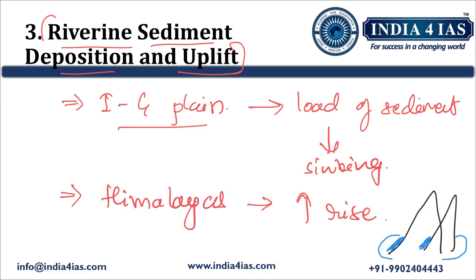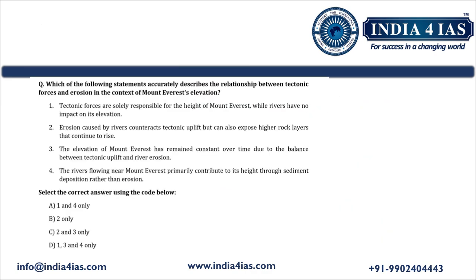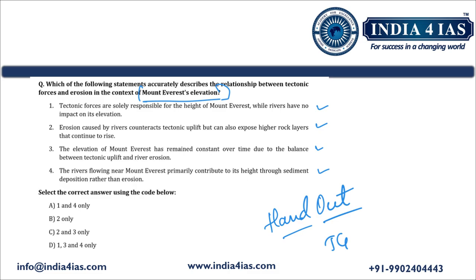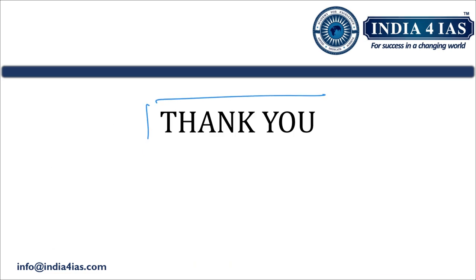After eroding of the material, the crust experiences a lighter load. Because of that, the lower layers of rock are pushed upward and are again exposed to erosion. This process continues until there is an isostatic balance. This is all about how nearby rivers, by eroding materials from the base of Mount Everest, contribute to its uplift. Based on the topic discussed, a prelims practice question with four statements has been provided. The answer and detailed explanation are available in the PDF handout, which you can download by joining the Telegram channel. This PDF also contains detailed notes of this video. Thank you for watching. See you in the next video. Till then, happy learning.